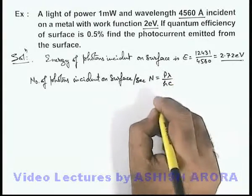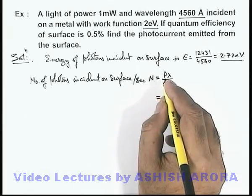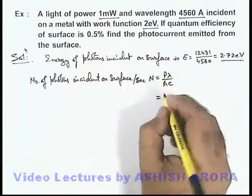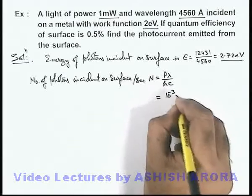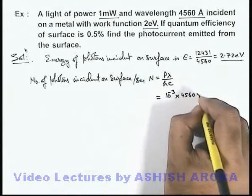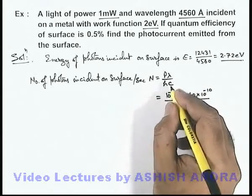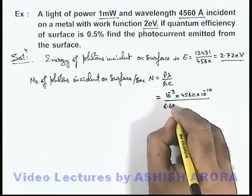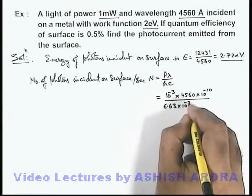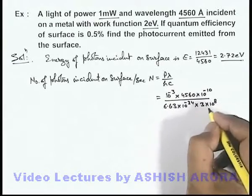So on substituting the values we'll get, here we are given that the power of the beam is 1 milliwatt that is 10 to power minus 3. Wavelength is 4560 multiplied by 10 to power minus 10, divided by hc we can substitute as 6.63 into 10 to power minus 34, multiplied by 3 into 10 to power 8.